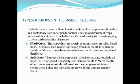Rabi crops are crops which are grown in the winter season. The time period for Rabi crops is generally from October to March. October to March is the winter season, and production can continue up to March. Examples of Rabi crops are wheat, gram, pea, mustard, and linseed.